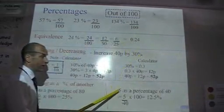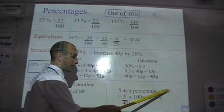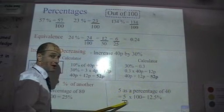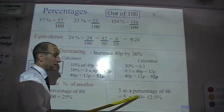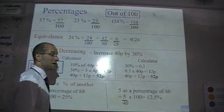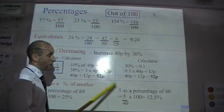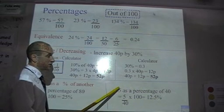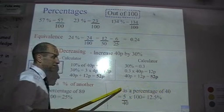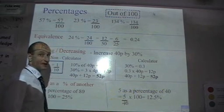If I want 5 as a percentage of 40, I do 5 divided by 40, and then just times by 100. That would give me 12.5%. So one thing as a percentage of a number, just divide the second one into the first one, and times the answer by 100.